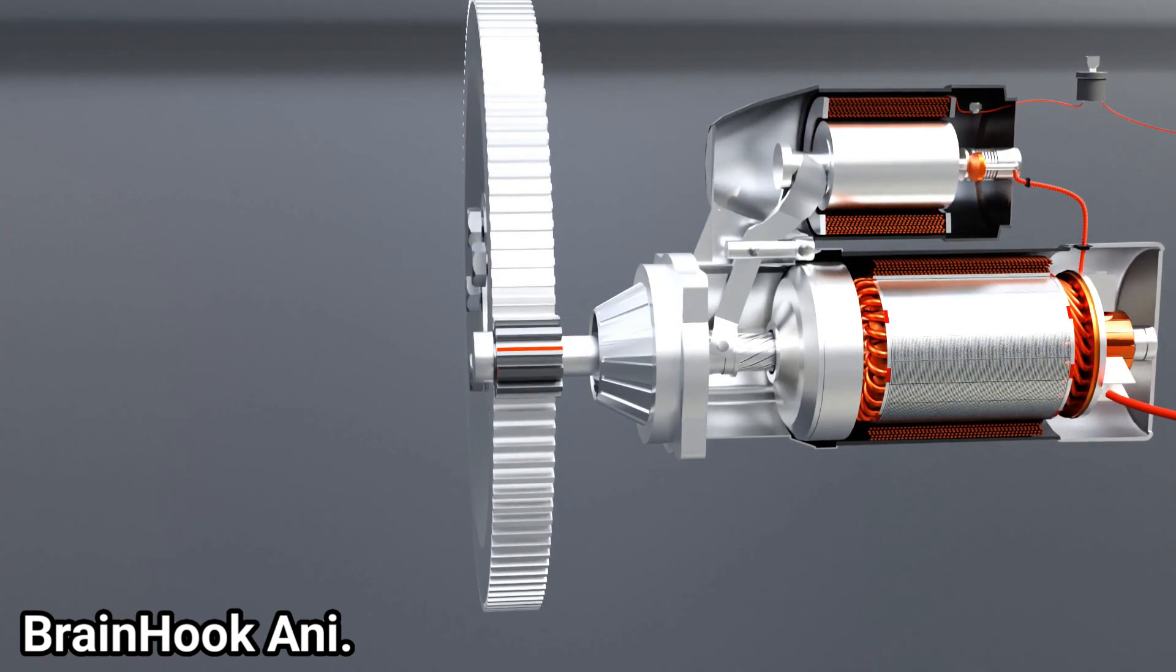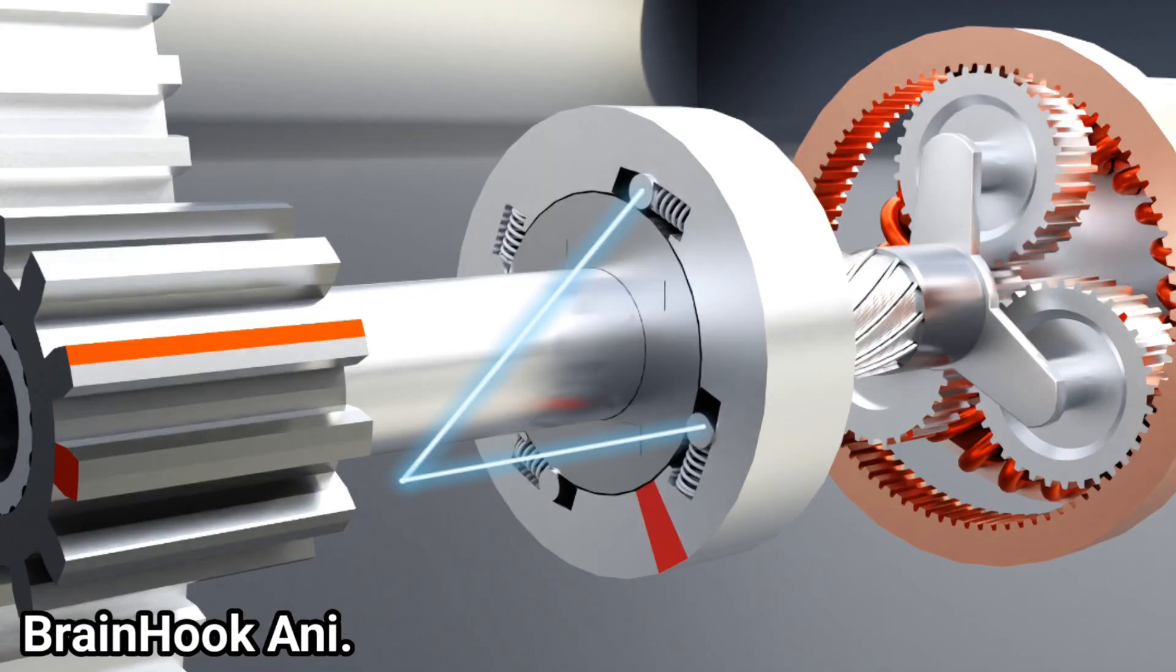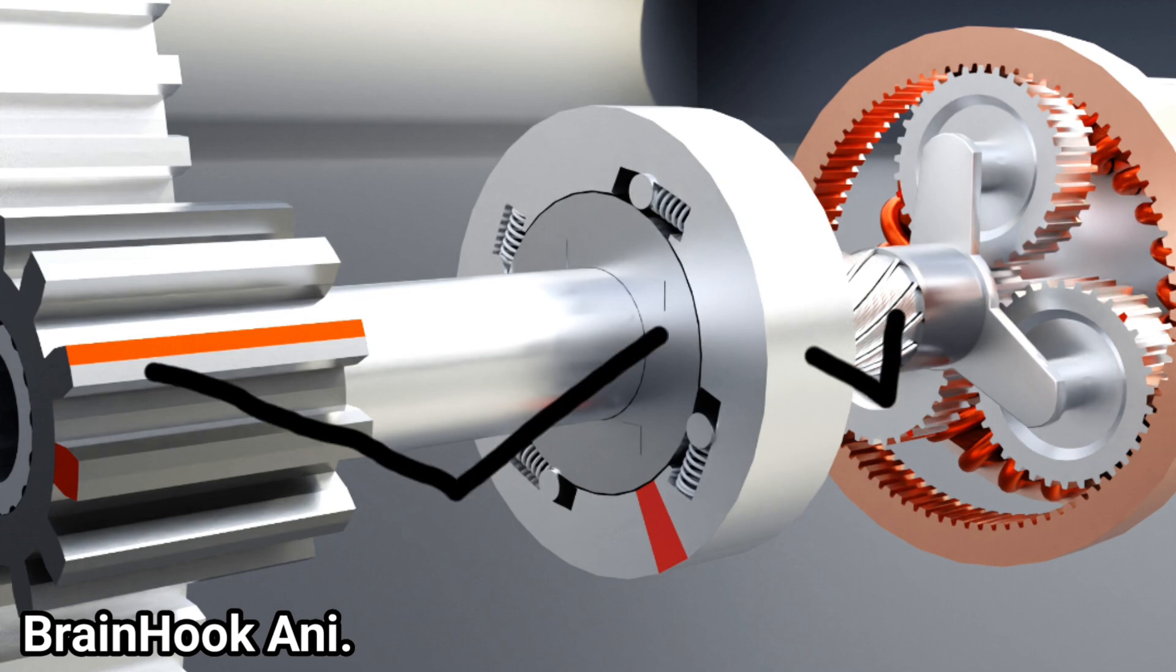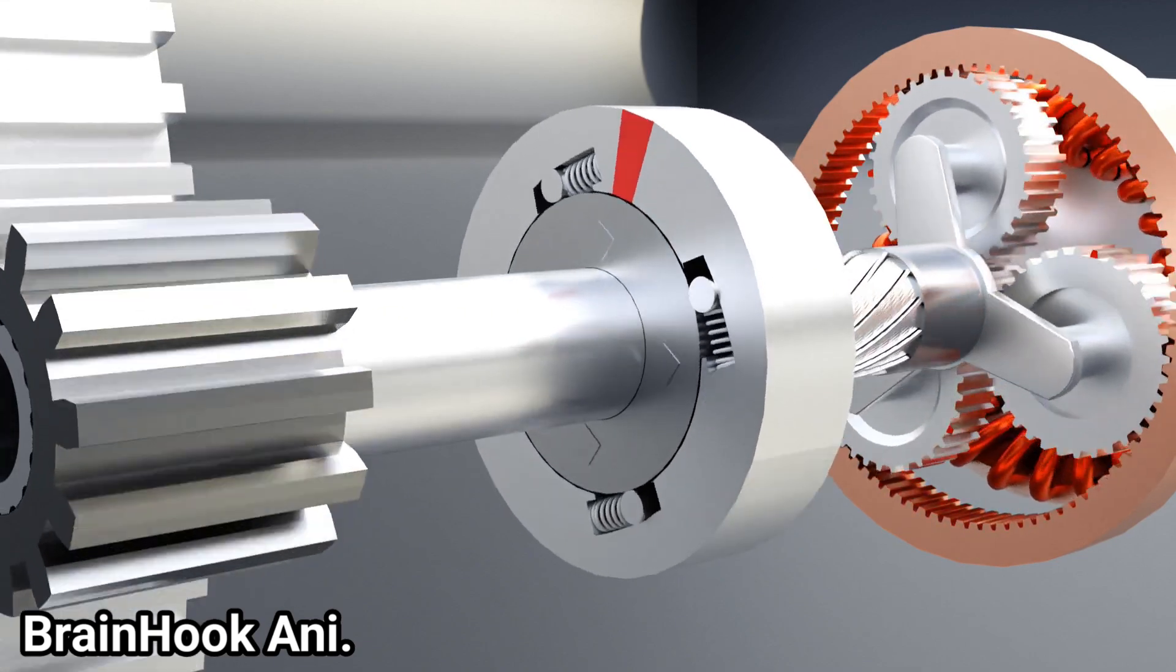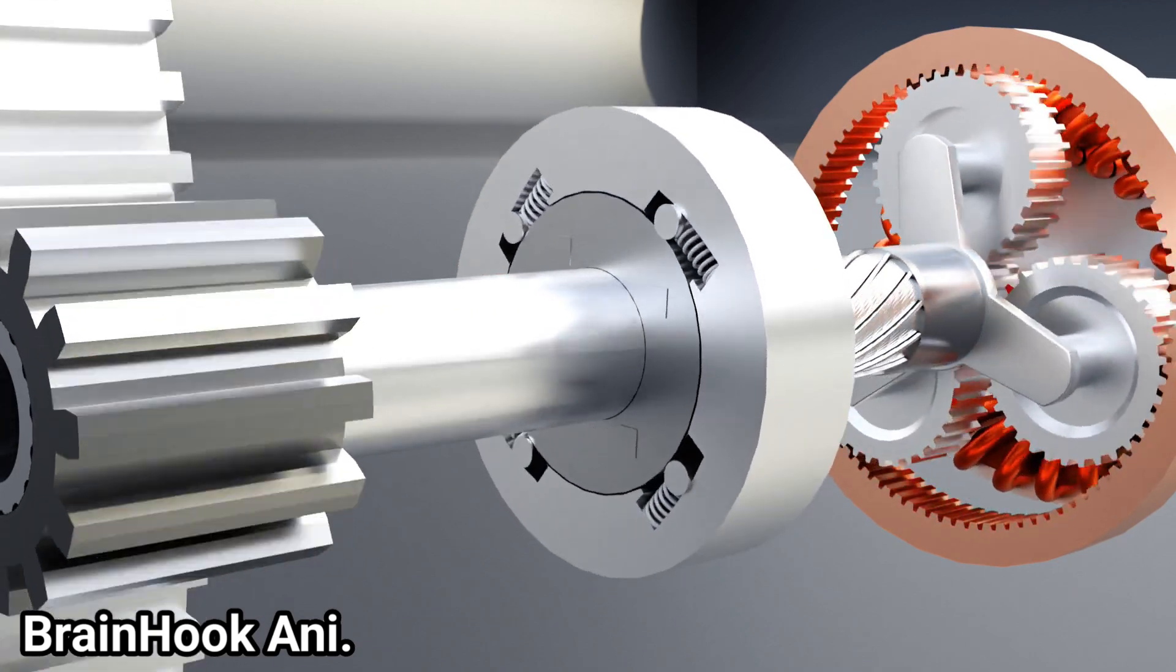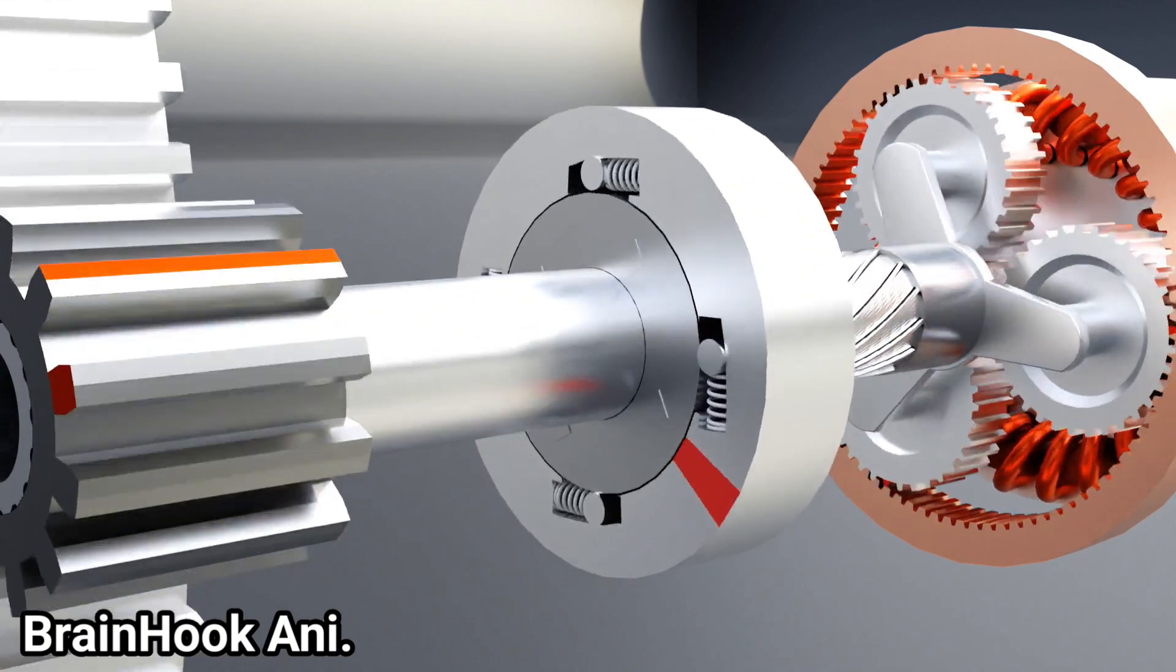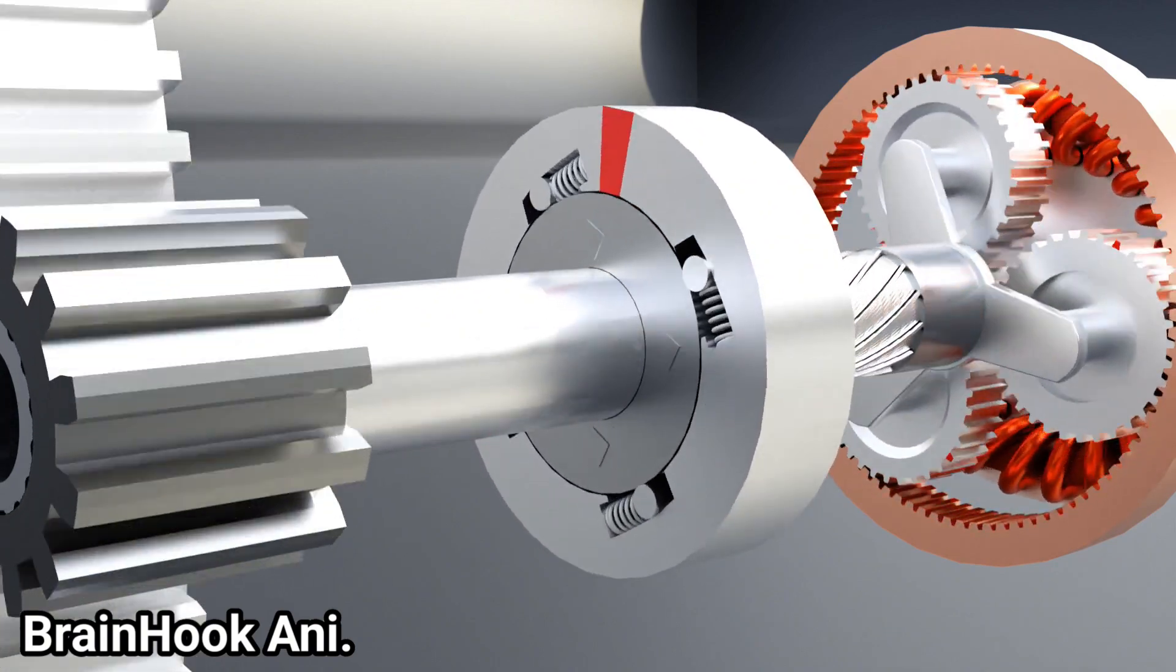To solve this problem, one-way clutch is used. A number of rollers are placed between the outer and inner races of the one-way clutch. The outer race is connected to the carrier and the inner race to the pinion. As the outer race starts to rotate, the rollers lock the outer and inner races. This causes the full power of the motor to be transferred to the pinion gear, which turns the flywheel.